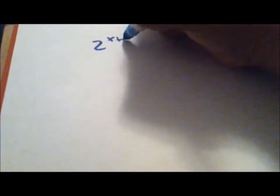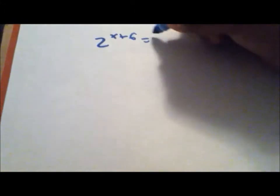Hello, today we're going to learn how to do exponential equations. Let's start out with an easy one, 2 to the power of x plus 6 equals 32.